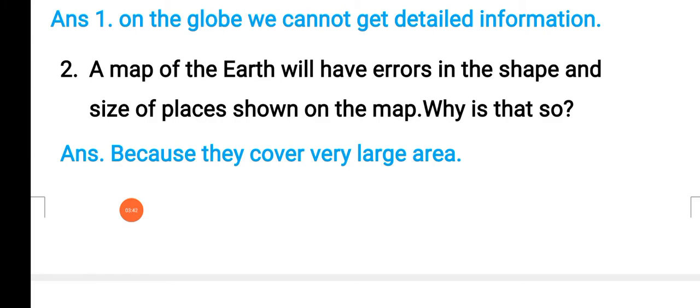A map of Earth will have errors in shape and size of the places shown on the map. Why is it so? Because they cover a very large area, so we have some errors.